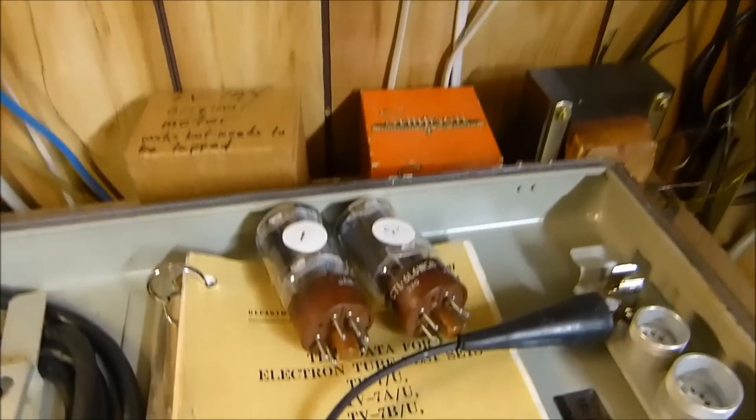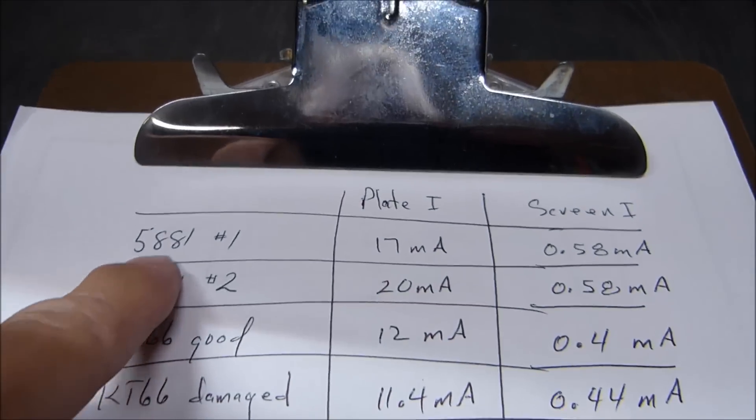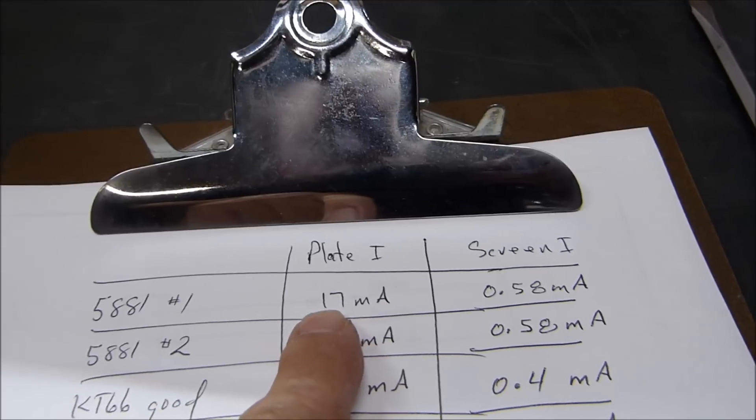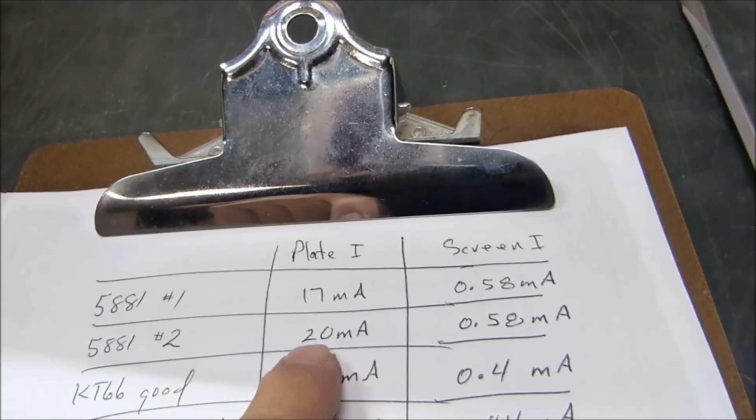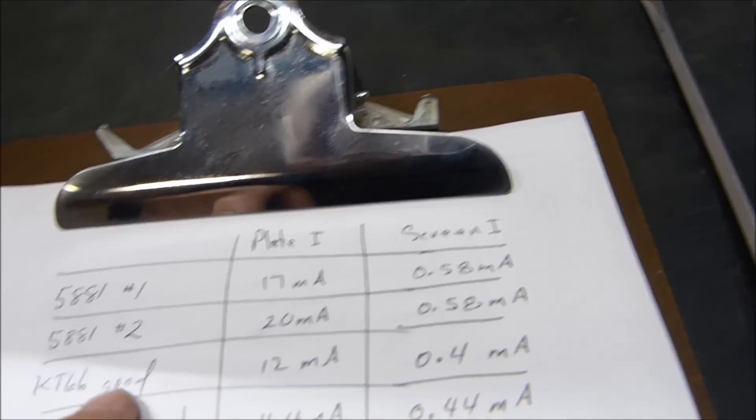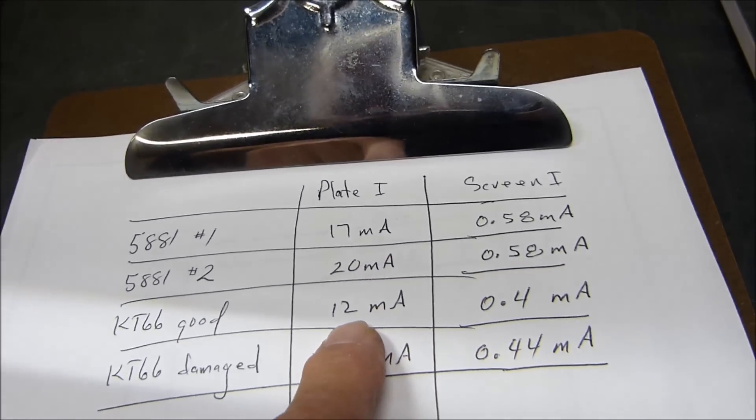I took my two really nice 5881s and these damaged KT66s and made some measurements. The 5881s measured 17 milliamps of plate current and 580 microamps of screen current. The second one measured 20 milliamps with the same screen current.